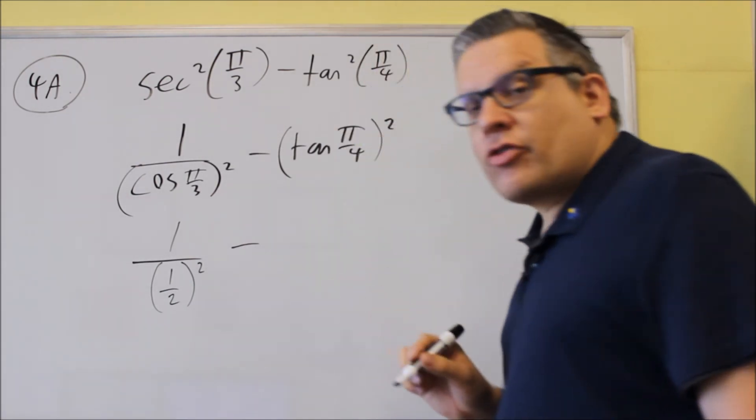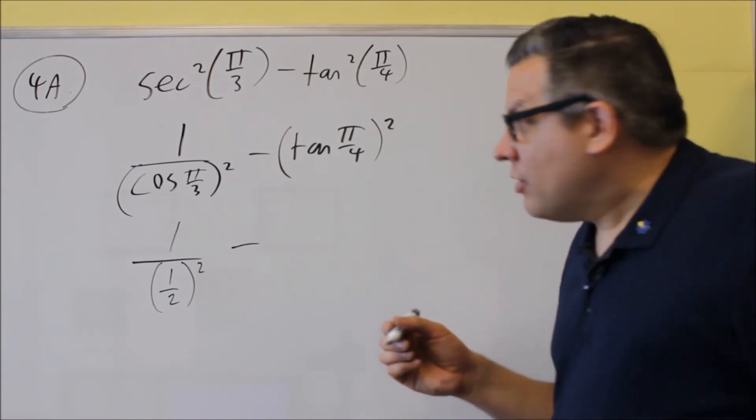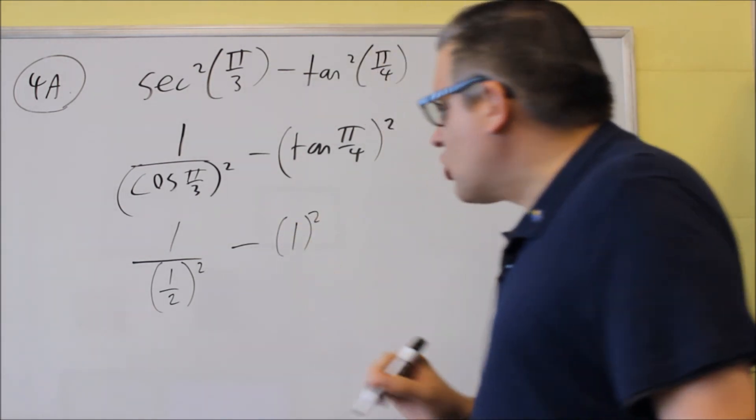Next, tangent pi over 4. Okay, we look at that. That's going to be the same thing as 45 degrees. It's 1. So this is 1 squared.